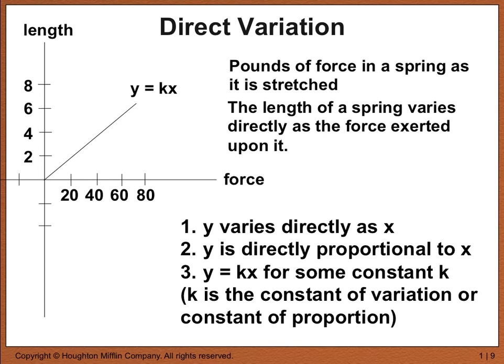You might ask where k comes from — the answer is that k depends on each case. For example, if we're talking about springs, different springs would have different k values, because k is the constant of variation and depends on the kind of metal and how thick the coils are. So you calculate k on a case-by-case basis. What k represents is the constant of variation.